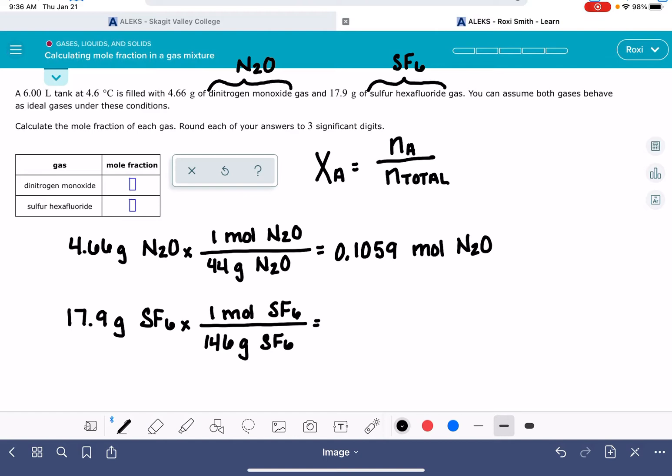So this works out to be 0.1226 moles of SF6, assuming that I'm doing my math right. I might be adding these numbers up incorrectly, but the process is correct.